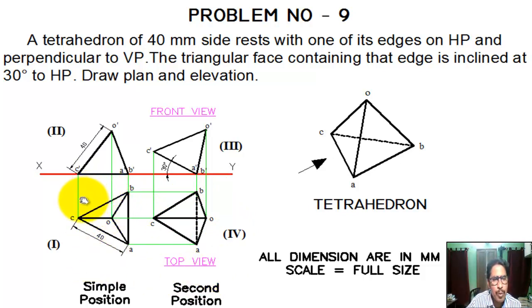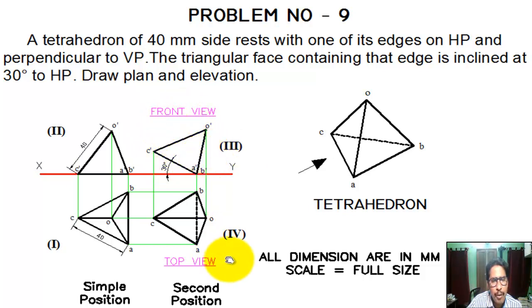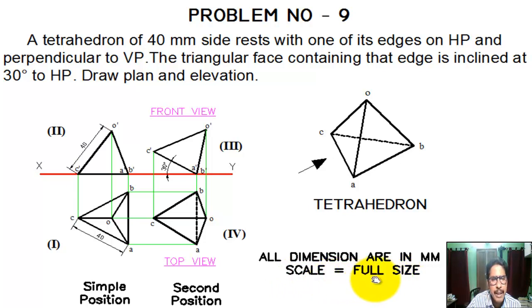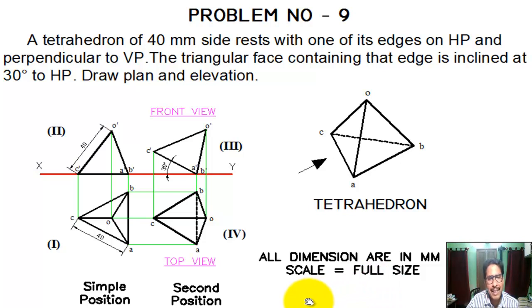So first we drew the top view in normal/simple position; second, the front view in simple position; third, the front view in final position; fourth, the top view in final position. All dimensions are in millimeters, scale equal to full size — full size means RF equal to 1:1. If we draw the drawing at half dimension, then RF equal to 1:2. It is clear, my student. Thank you.